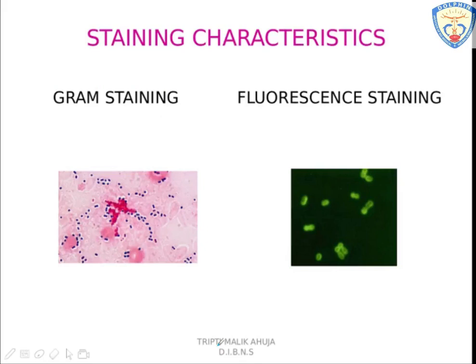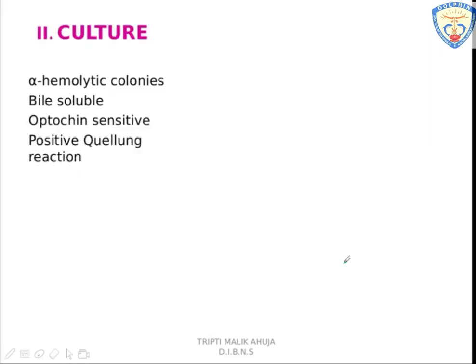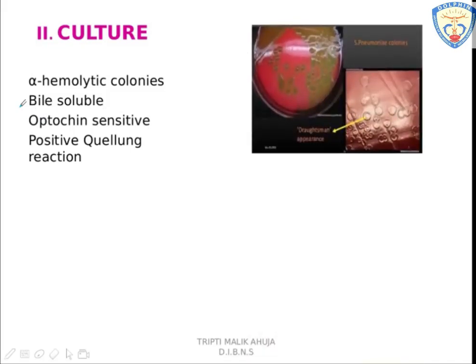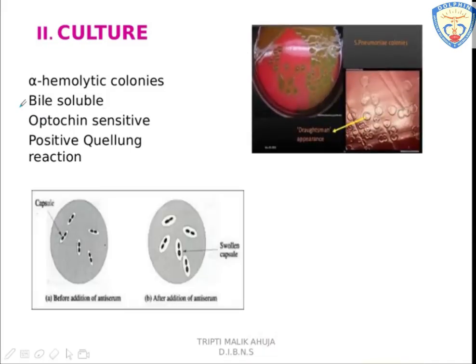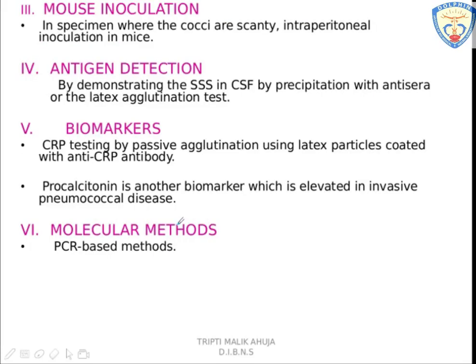This shows the Gram staining and fluorescent staining of S. pneumoniae. Among the culture methods, the culture is carried out on blood agar. There is alpha hemolysis. The colonies are characteristically bile soluble and optocin sensitive. In a positive Quellung reaction, as seen in this figure, there is a capsule around the organism, and the capsule becomes swollen when homologous antiserum is added. The clinical material can also be inoculated into a mouse, where it shows peritonitis.